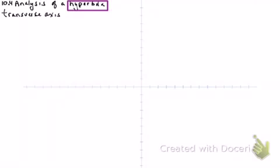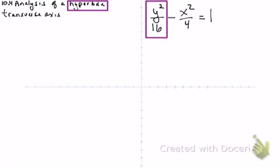I'm going to look at number 28 in the book, and this is y² over 16 minus x² over 4 equals 1. So I picked this one on purpose because this one has its transverse axis as the y-axis, and I can tell because the y is listed first.